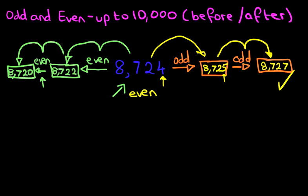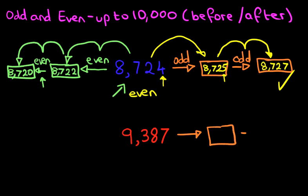And let's look at our second example. Suppose this time we have the number 9,387. The question that is being asked is: what are the two even numbers after this number, 9,387?